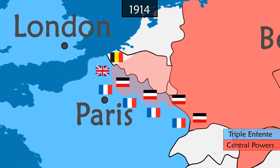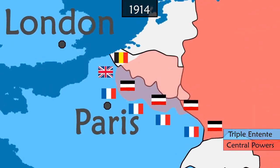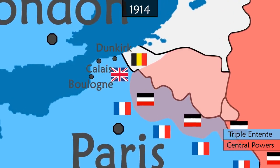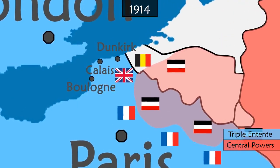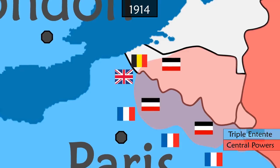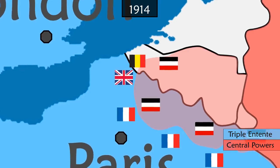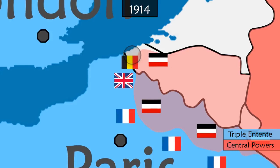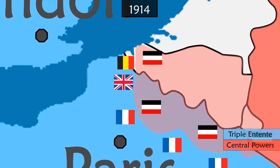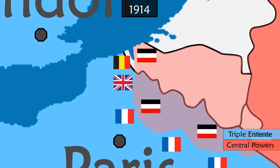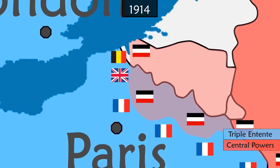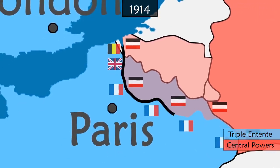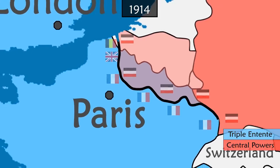The new German objective is to take over the strategic ports of Calais, Dunkirk and Boulogne to cut British supplies. The inferior Belgian army cannot resist the German advance. In the plain of Yser, the choice is made to open lock gates to flood the polders. With the German army stopped in their tracks, the front line is etched out with the construction of 700 km of trenches, stretching from the North Sea to Switzerland.